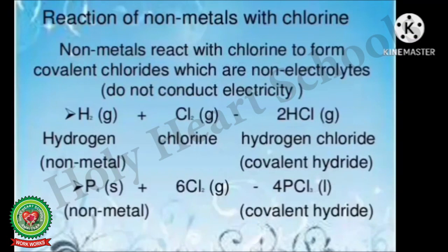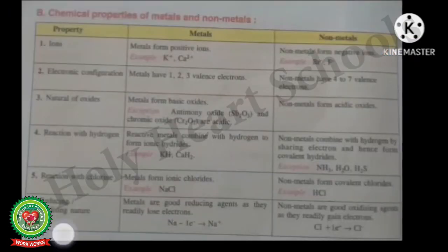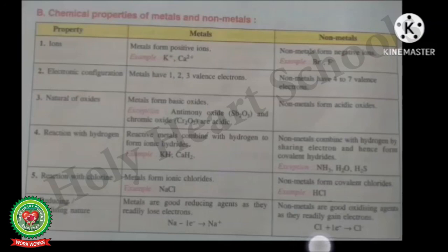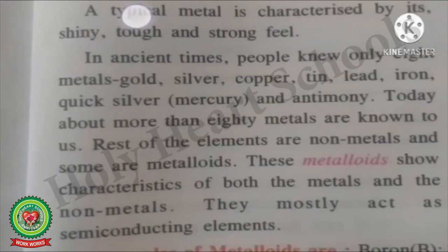The next chemical property is reducing and oxidizing nature. Metals are good reducing agents as they readily lose electrons. For example, sodium acts as a reducing agent — sodium loses one electron to form a sodium ion (Na⁺). Non-metals are good oxidizing agents as they readily gain electrons. For example, chlorine acts as an oxidizing agent because it gains one electron to form Cl⁻.